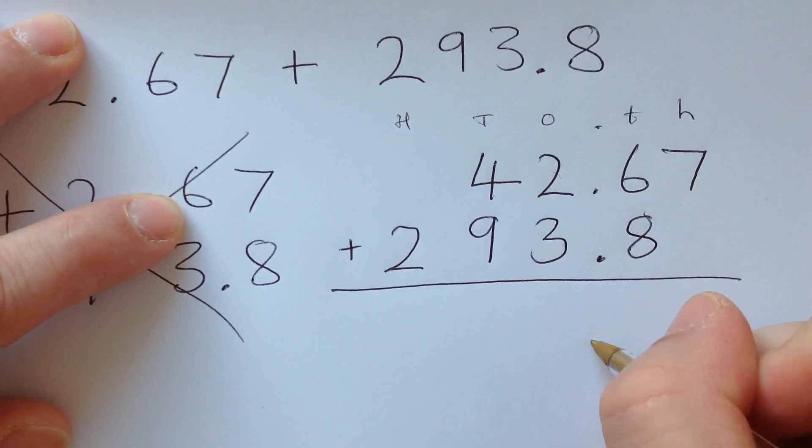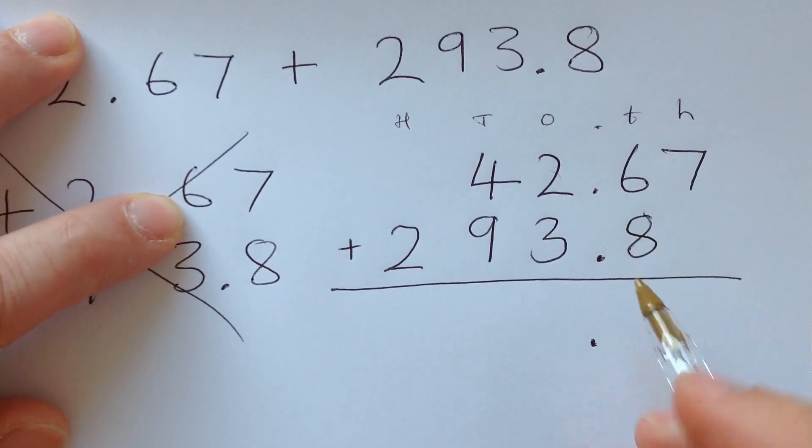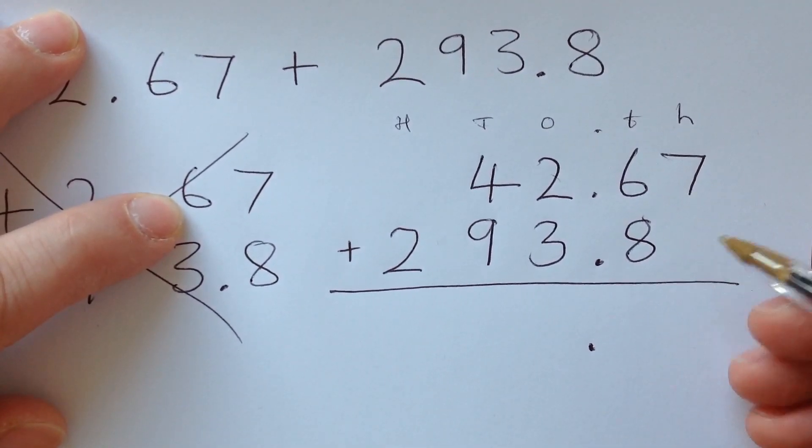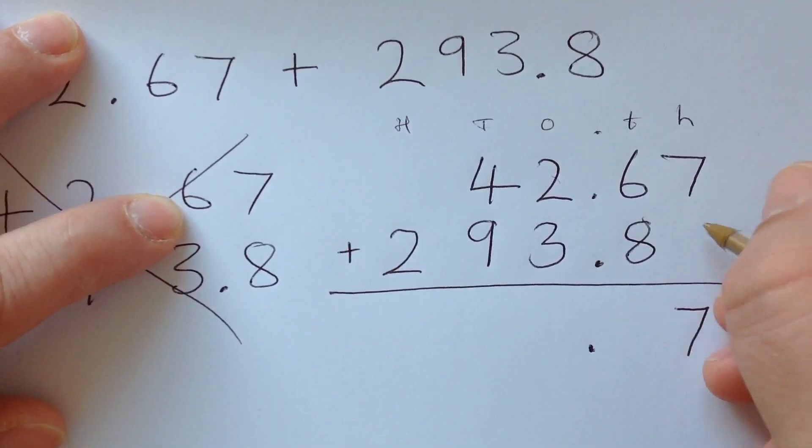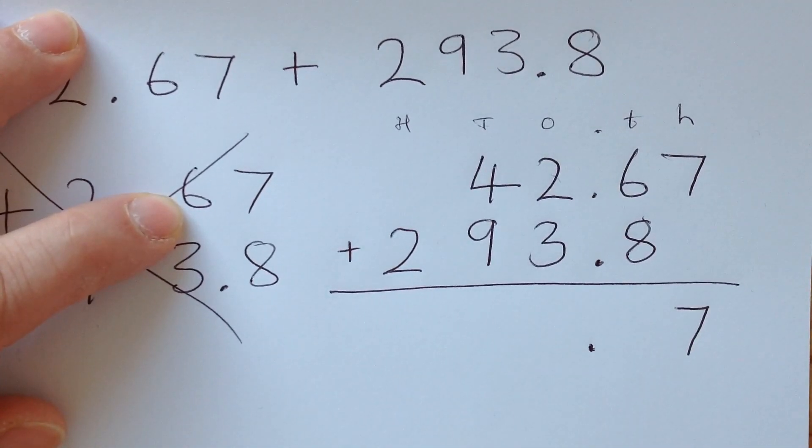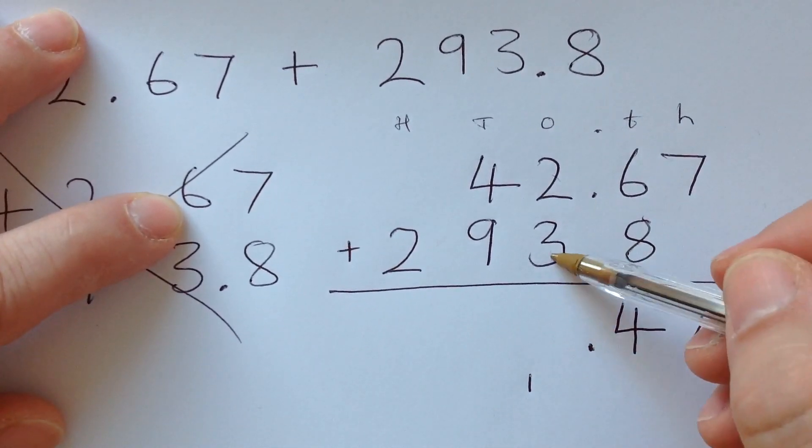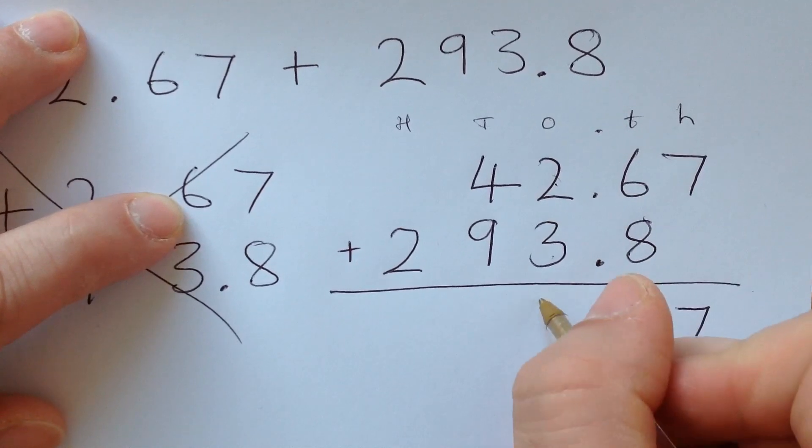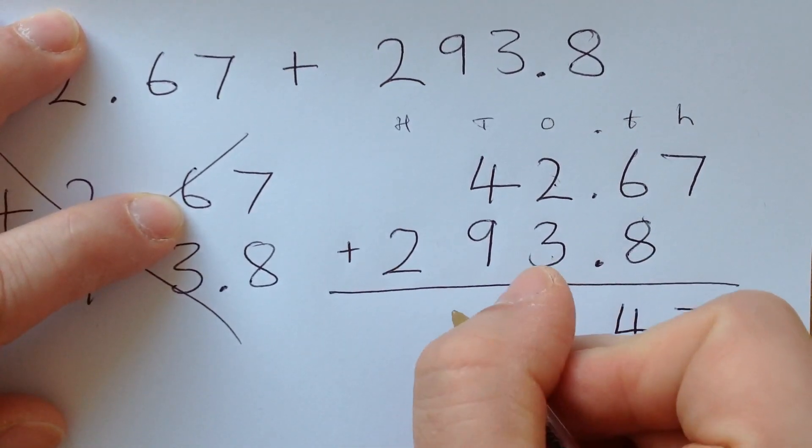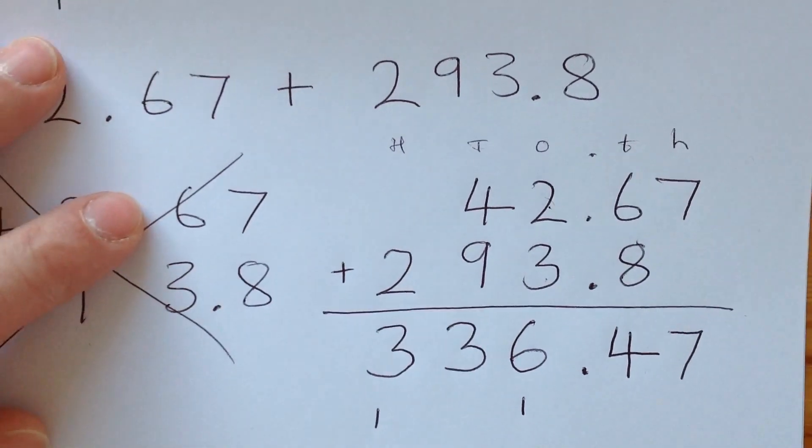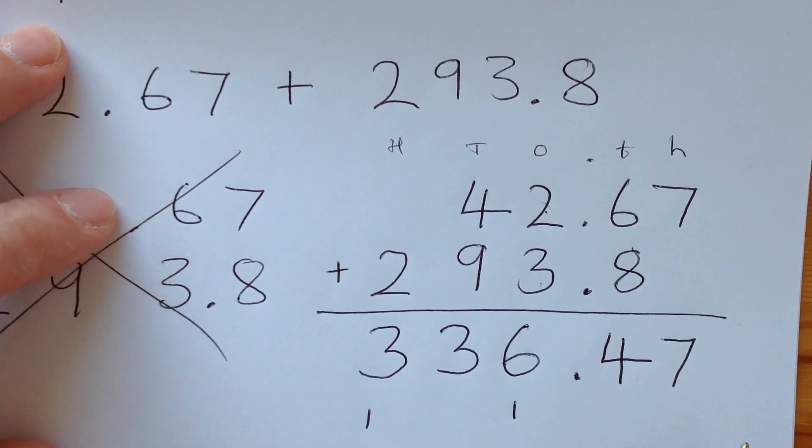Because firstly, let's put the decimal point in the answer. So I know it's going to have to have that decimal point lined up. Seven hundredths plus no hundredths is seven hundredths. If I wanted to, I could put a zero there. It wouldn't change the number. Six tenths plus eight tenths is fourteen tenths. So I put in the four, and I carry the one. Three, four, five, six. Nine and four is thirteen. Two and one is three. So there's my answer. Three hundred and thirty-six point four-seven.